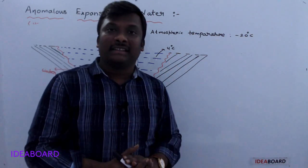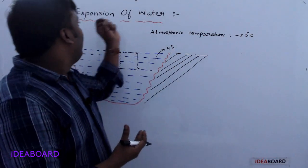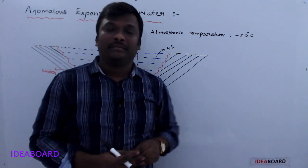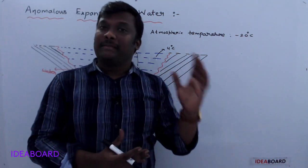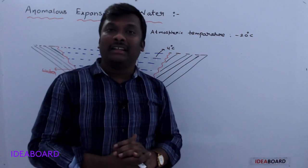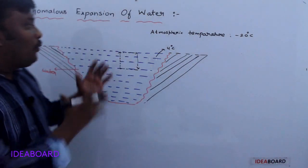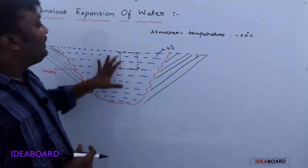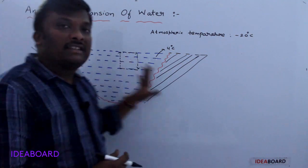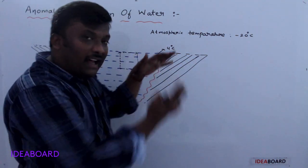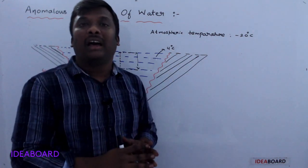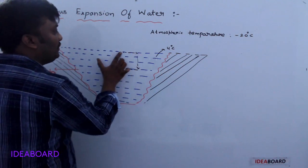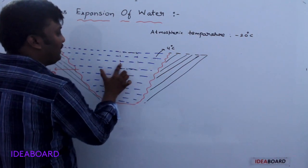The temperature of the water reduces continuously until 4 degrees Celsius. At 4 degrees Celsius, water has the special behavior called anomalous expansion. Since density is maximum and volume is minimum at 4 degrees Celsius, further convection is stopped — there is no more transfer of heat from one molecule to another.